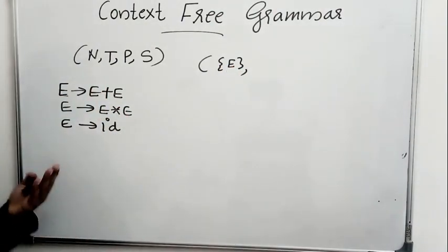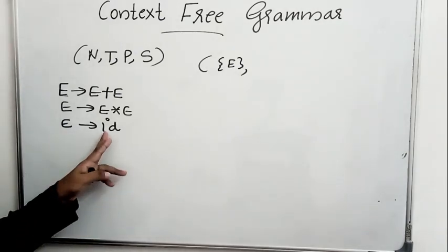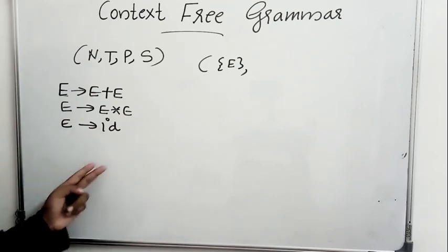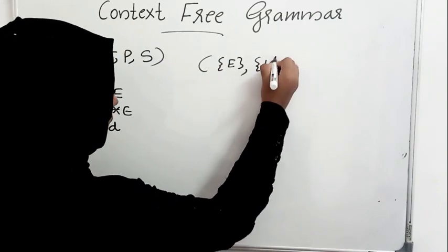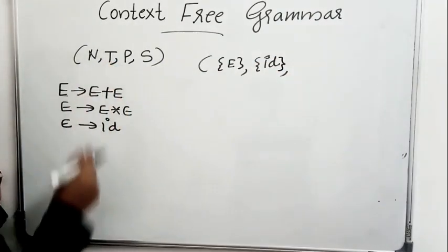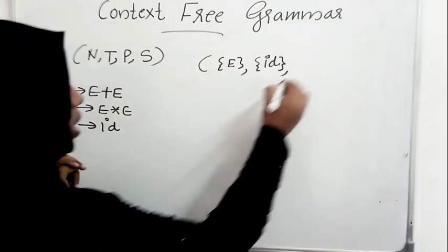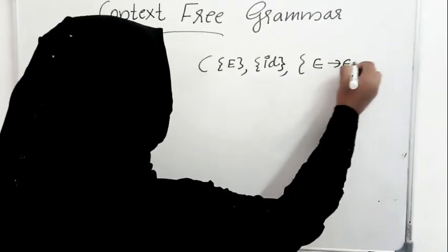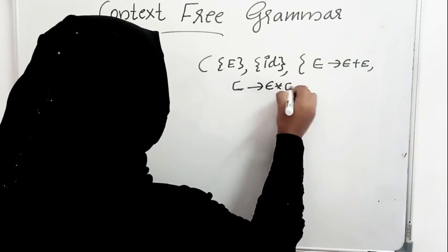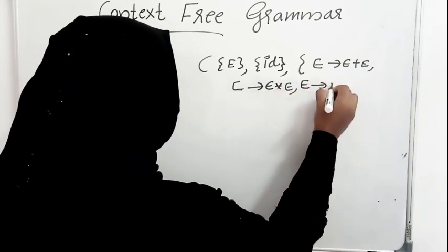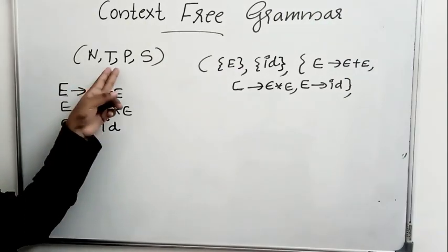T is a set of terminals. Terminals are the symbols that will never appear on the left-hand side. Here, ID is a symbol that doesn't appear on the left-hand side of any production, so ID is a terminal. P is a set of productions. We can see three production rules: E gives E plus E, E gives E star E, and E gives ID. These are the production rules — that is the set P.